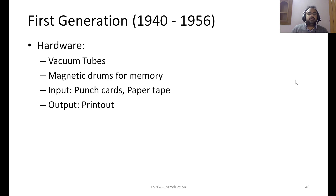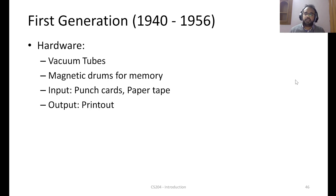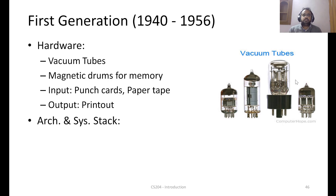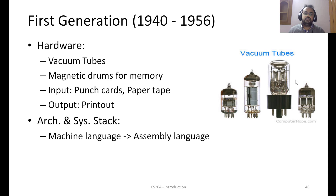The very first generation had hardware primarily built on vacuum tubes or magnetic drums for memory. Input was typically punch cards or paper tape, and output was primarily printout — there was no display. Vacuum tubes were very bulky and inefficient with respect to energy consumption. On the software stack, machine language (zeros and ones) was developed, progressing to assembly language.